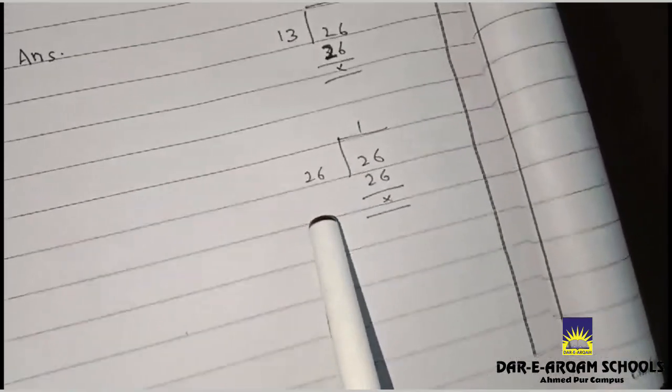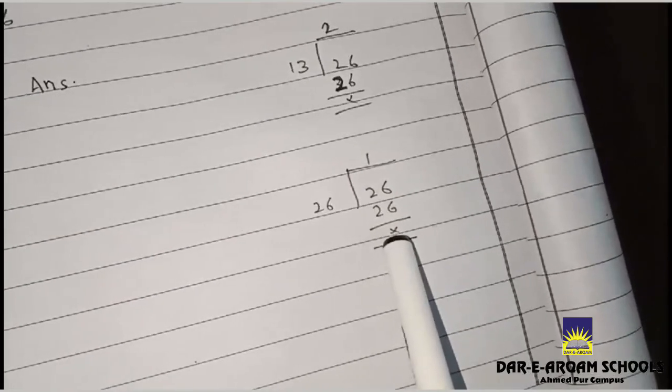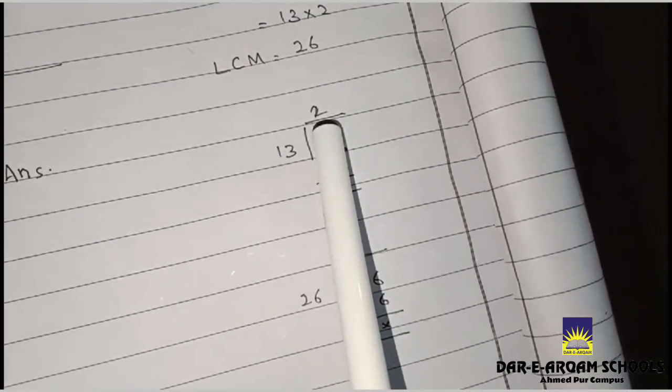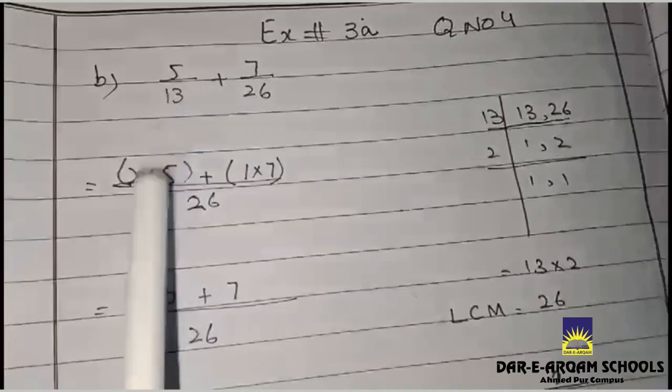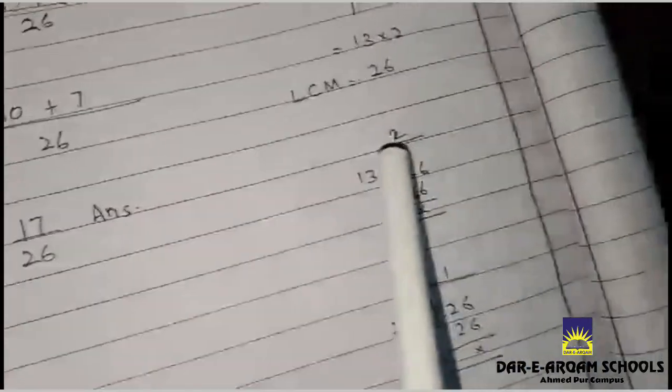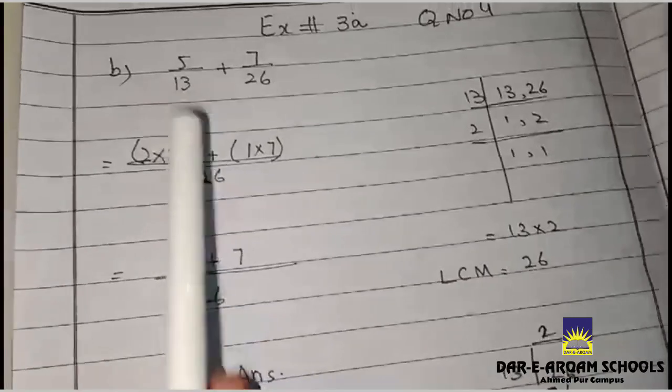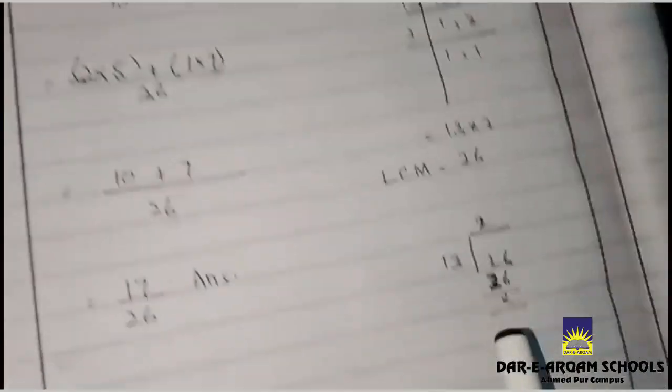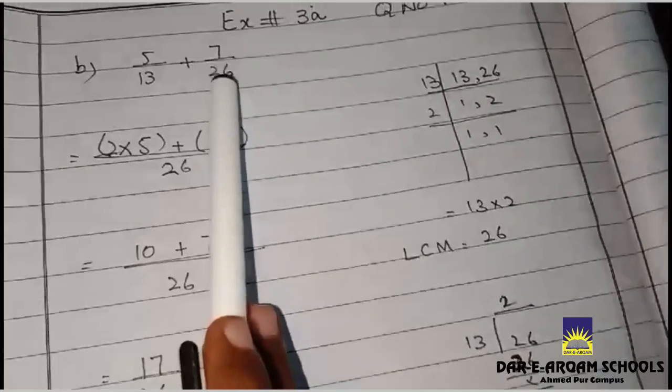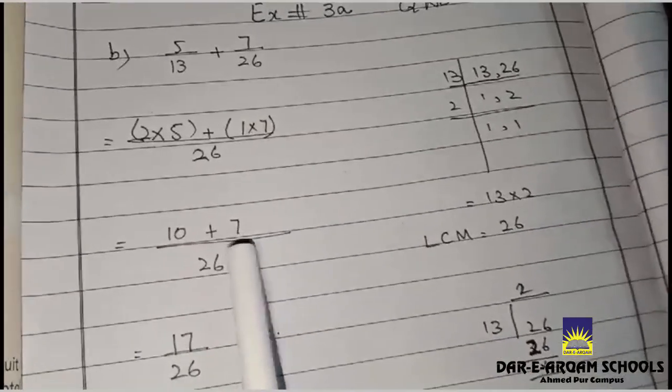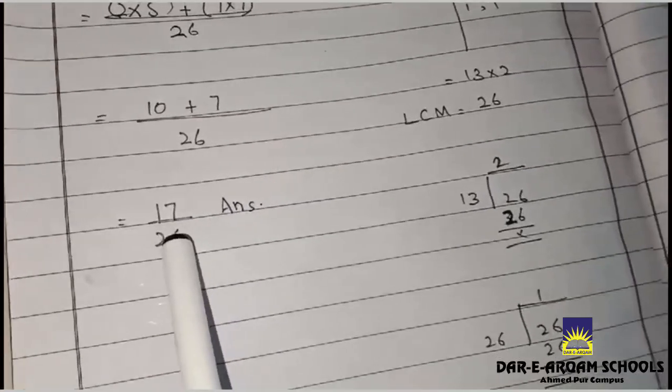This is our answer. We're going to multiply this by 2 and multiply this by 5. 2 times 5 is 10 and 1 times 7 is 7. We add 10 and 7 to get 17.